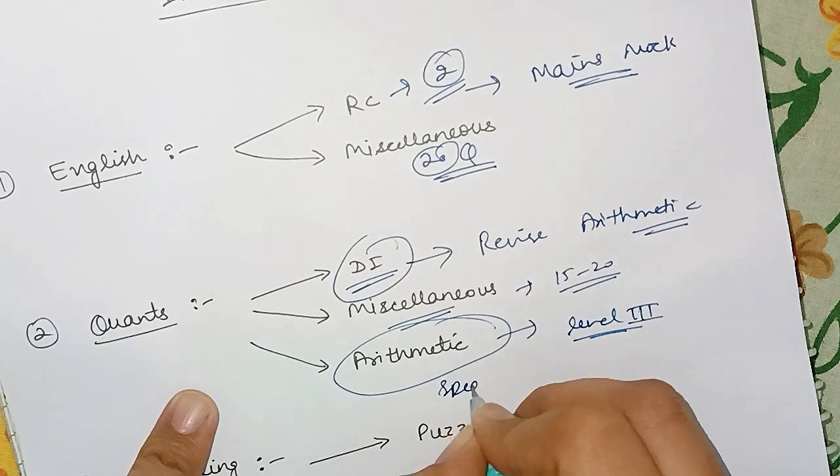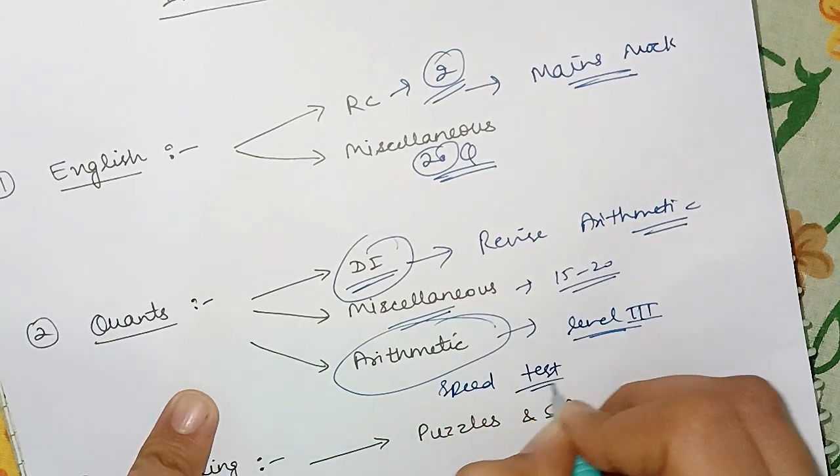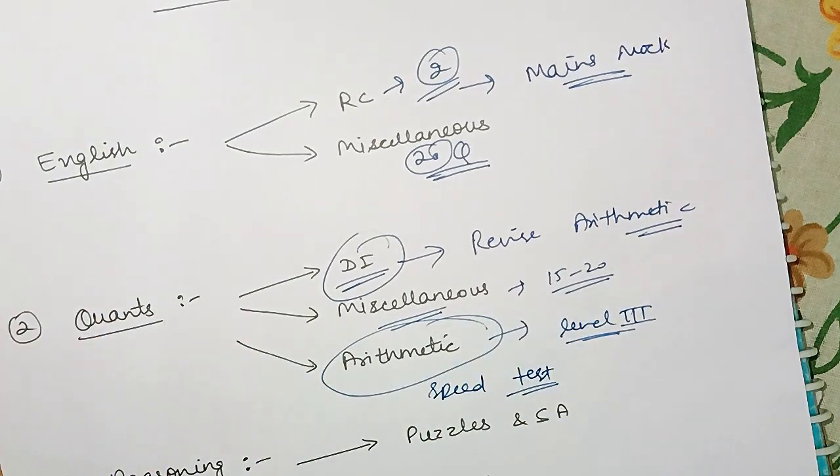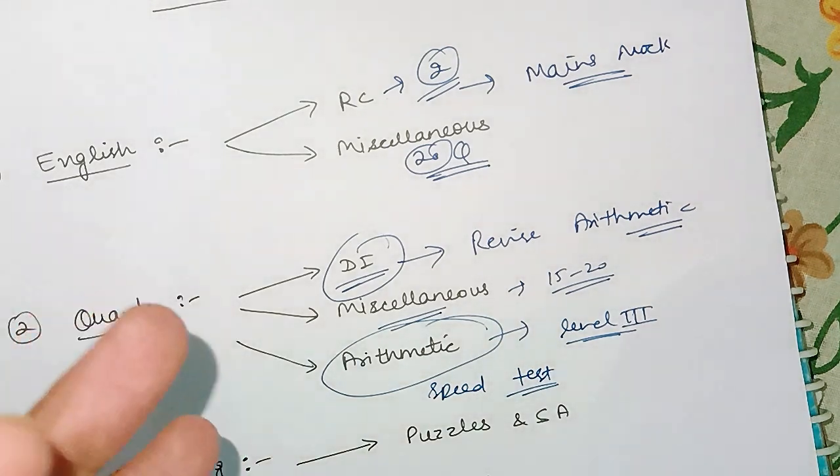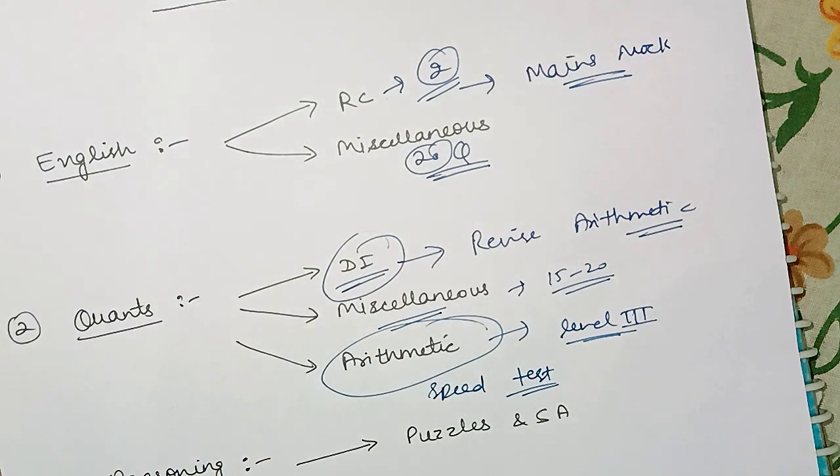And yeah, the last thing is speed test. Do not forget speed test of number series and simplification because they do not come in the mains examination but they help you in keeping your speed. So you do not do the calculations very late. This is very important. Do not skip the speed test. Do not think that if prelims is over then we have to skip it. No, you have to continue the speed test till your selection.